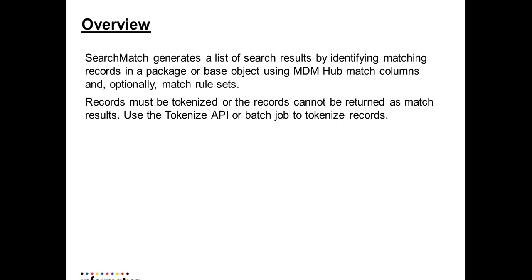To call a search match API, the records must be tokenized, otherwise it will not give any result. To tokenize the records we can use a tokenize API or we can run a batch job to tokenize the records.